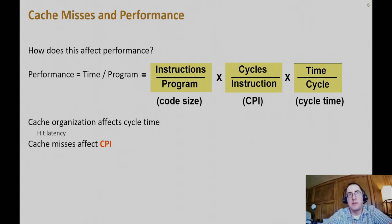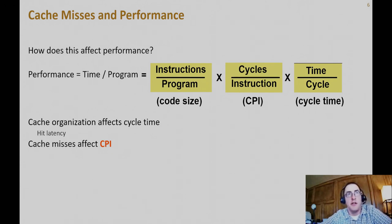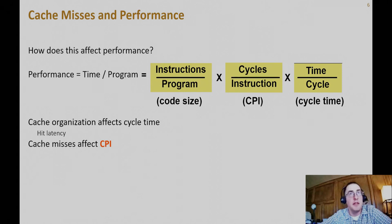Your L1 cache — you optimize the hit time so that you can keep the clock cycle time of the processor low. For the L2 cache, you optimize your miss rate because you want to avoid paying the steep penalty of going out to memory, since cache misses affect the number of cycles each instruction takes. Miss rate and miss penalty influence CPI; hit time influences cycle time.